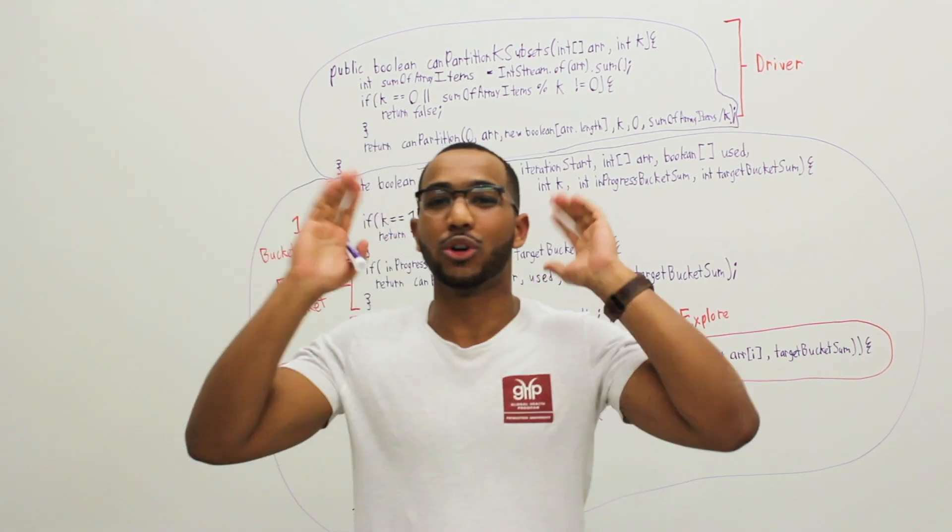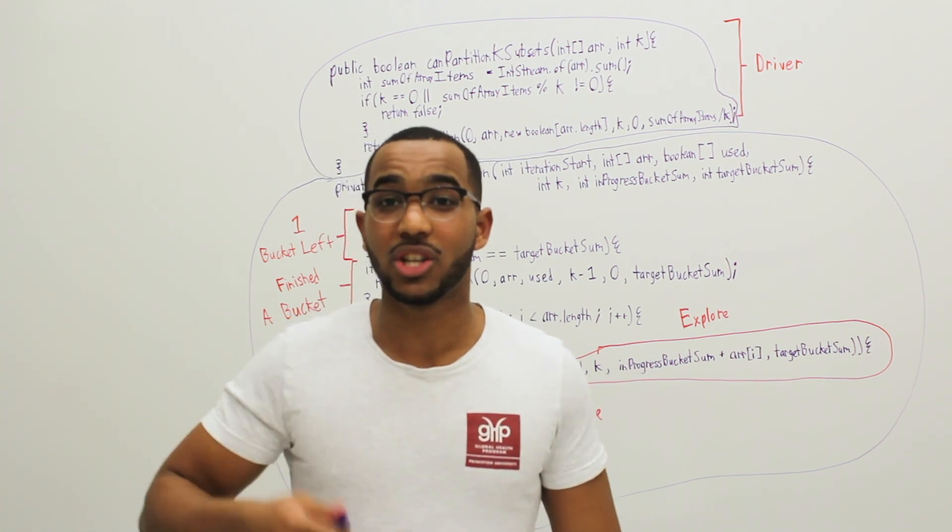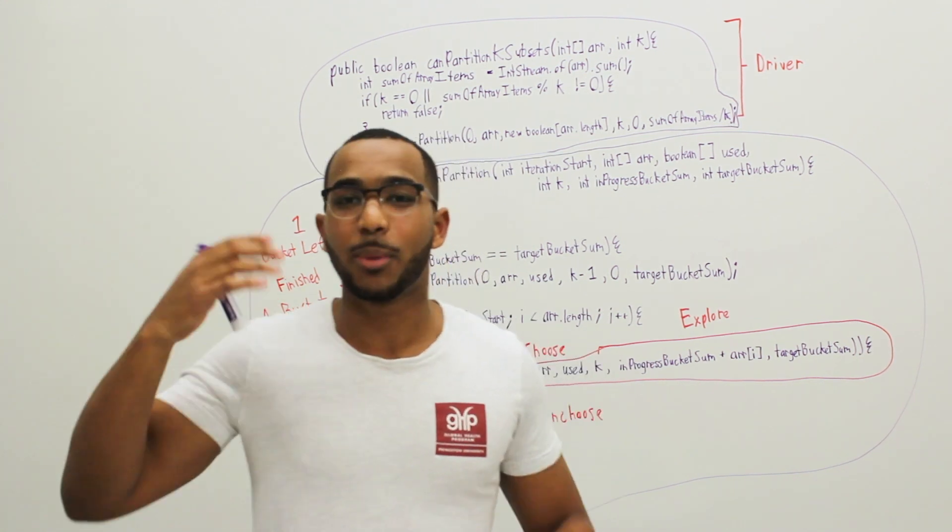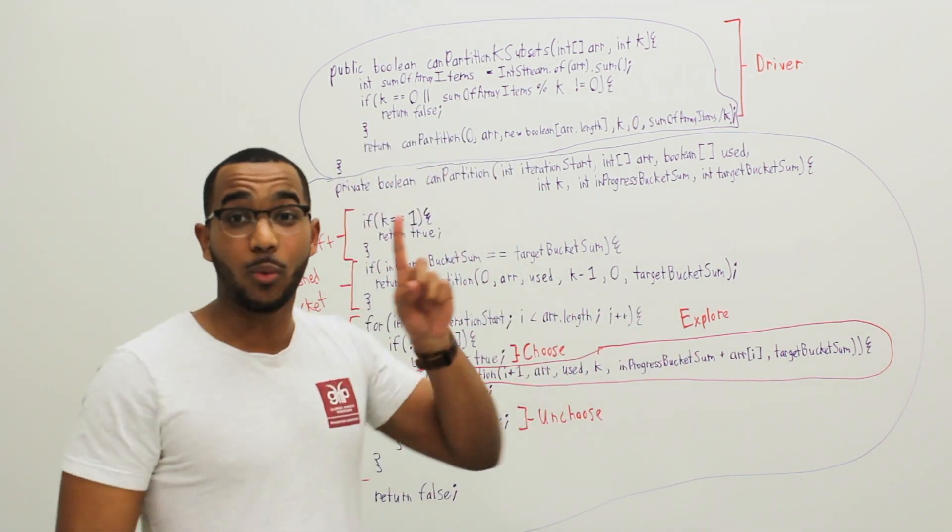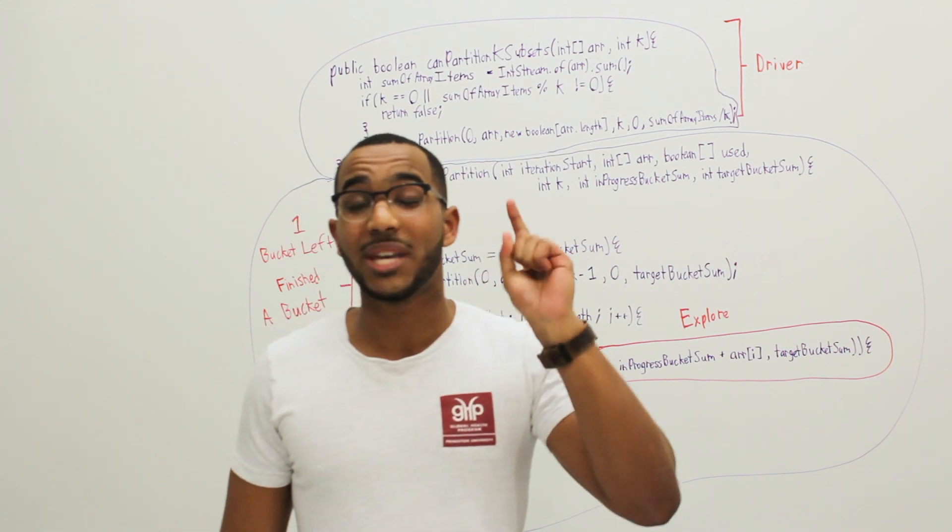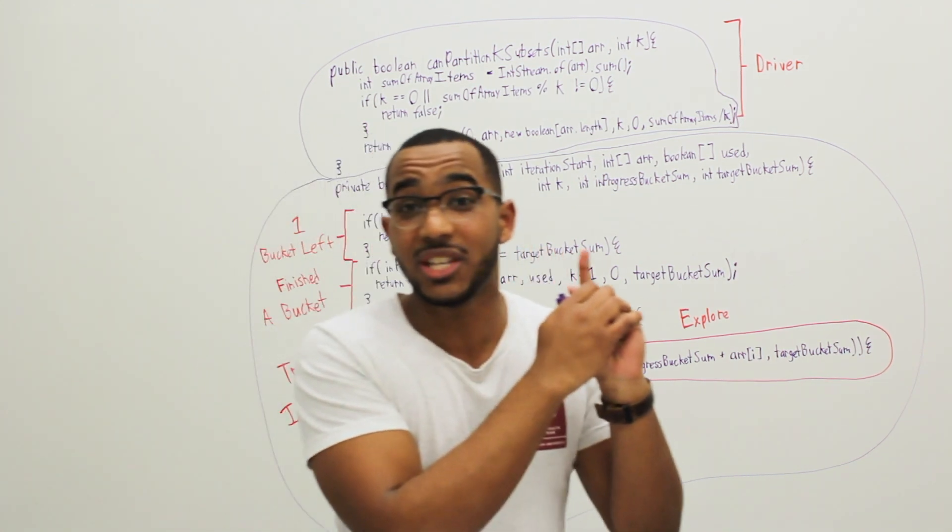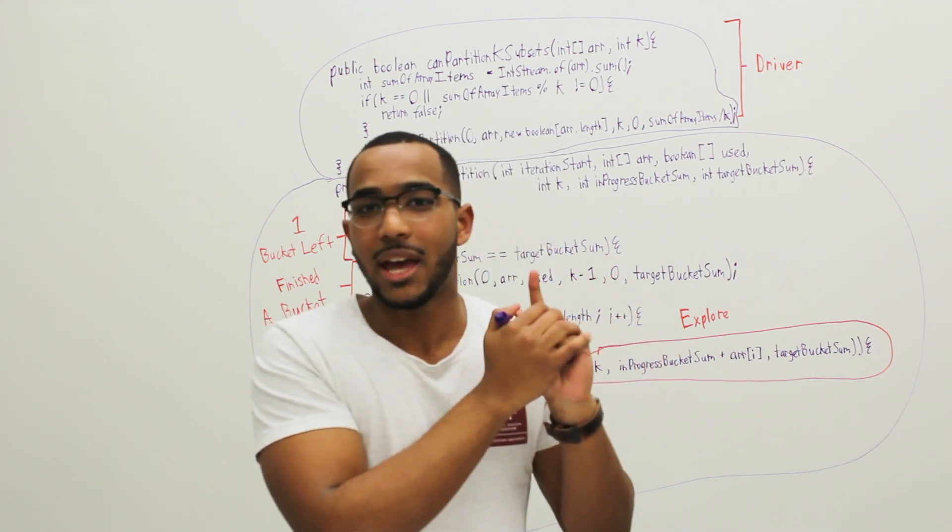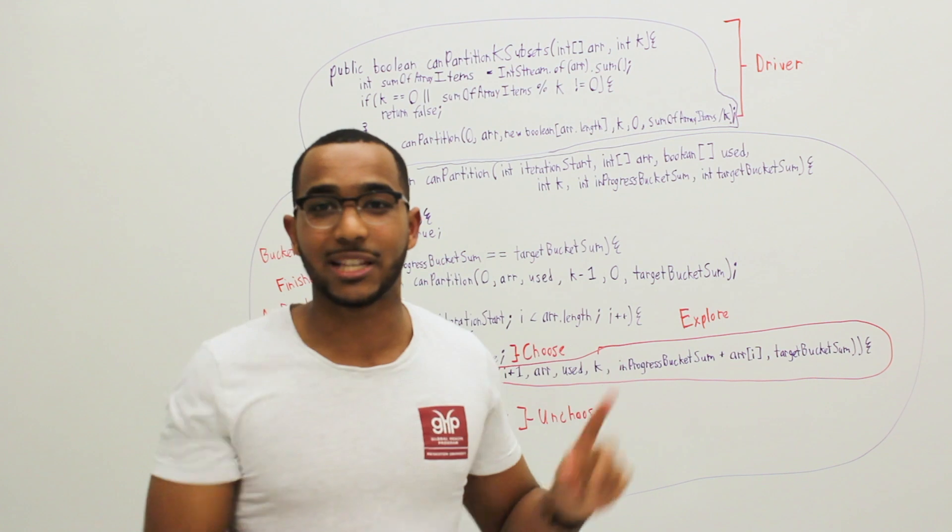Our last bucket will for sure be filled because we know that we can partition equal buckets. If we partition k minus 1 buckets, we can stop when we have only one bucket because we know for sure we're going to be able to fill that bucket with whatever is left. If we use 15 from a total of 20 and we fill those three buckets, we have 5 left. All we need for the last bucket is 5.